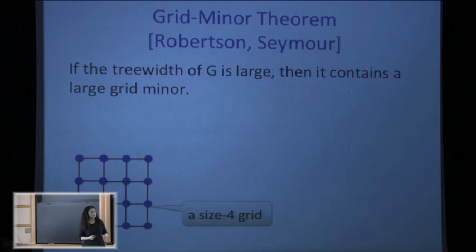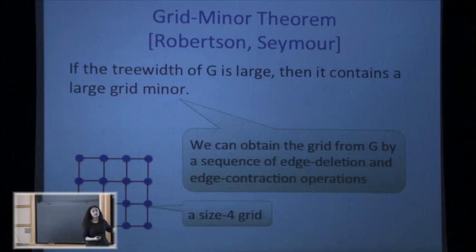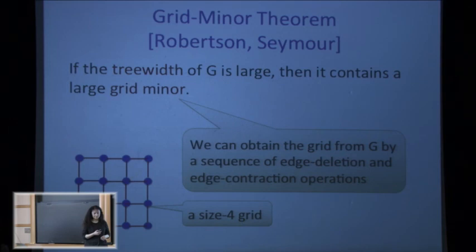A grid is a four-by-four grid, for example — I'll call it a size-four grid; the size of the grid is its side length. For this graph to have another graph as a minor means you can take that graph, delete some edges, contract some edges, and get the target graph — there is some sequence of edge deletions and edge contractions that gives you the grid.